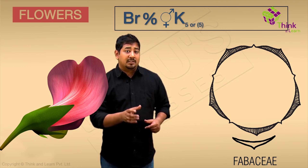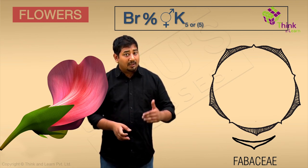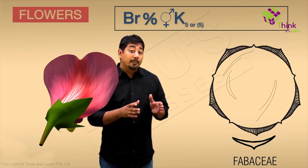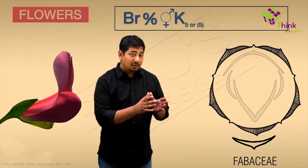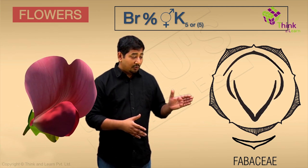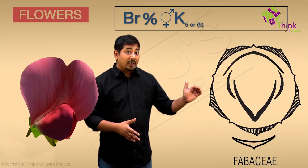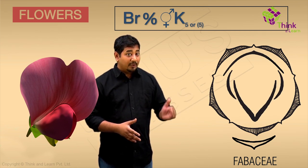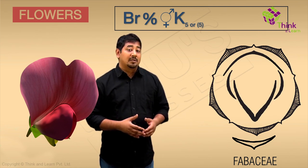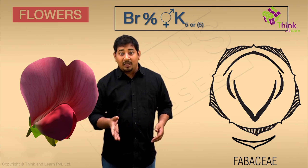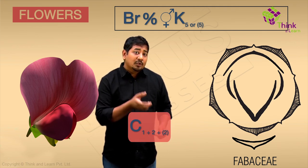The next whorl, that is the corolla comprising the petals, once again consists of five units in a characteristic papilionaceous arrangement, that is it looks like a boat. In the floral diagram there is one big petal, followed by two like wings, enclosing two fused petals. This is represented in the floral formula as 1 plus 2 plus 2 in parentheses.